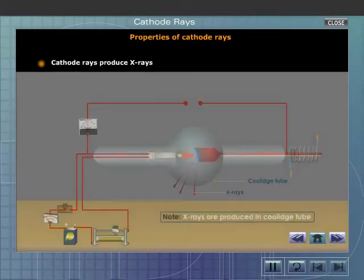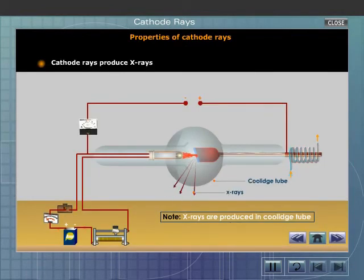Cathode rays produce X-rays when they impinge on a metal with a high atomic weight.